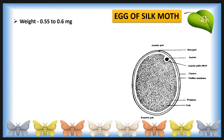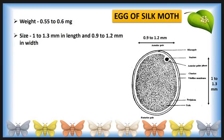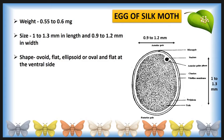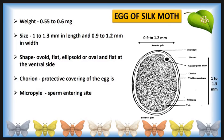Moving to the morphology of the egg: the weight of the silk moth egg is about 0.5 to 0.6 mg. The size is about 1 to 1.3 mm in length and 0.9 to 1.2 mm in width. The shape of the silk moth egg is wide, flat, ellipsoid or oval, and flat at the ventral side. The outermost cover of the silk moth egg is called the chorion, which is a protective covering of the egg. A small opening present on the silk moth egg is called the micropyle, and this is the sperm entry site.